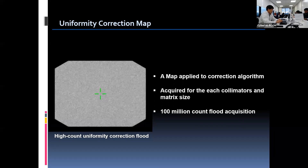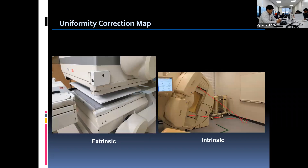The correction map must be acquired for each collimator and matrix size used for clinical SPECT imaging. The acquired count is about 100 million, which is approximately 10 times more than that of daily uniformity tests. Uniformity calibration can be done either extrinsically or intrinsically. However, it takes more time to complete as it requires much higher counts. The cobalt sheet source can also be used for extrinsic uniformity correction, providing uniform distribution of photons.